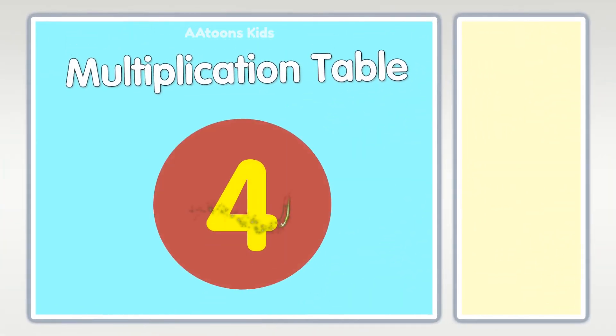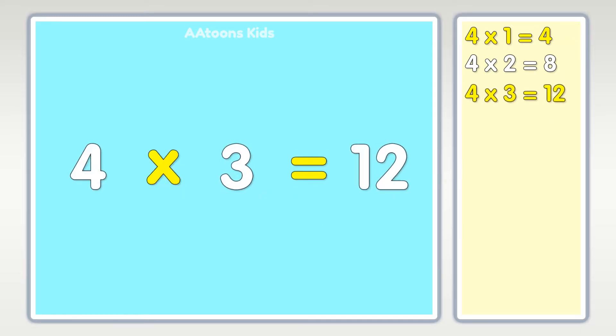Table of four: four times one is four, four times two is eight, four times three is twelve, four times four is sixteen.